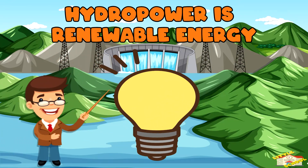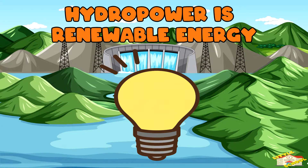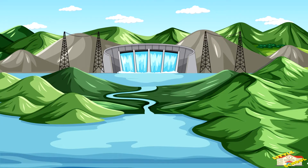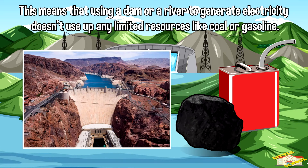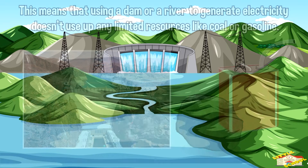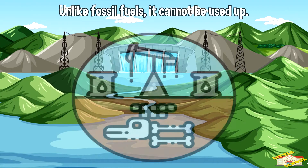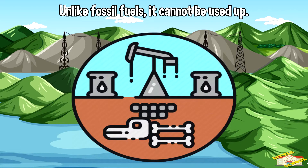Hydropower is renewable energy. This means that using a dam or a river to generate electricity doesn't use up any limited resources like coal or gasoline. Unlike fossil fuels, it cannot be used up.